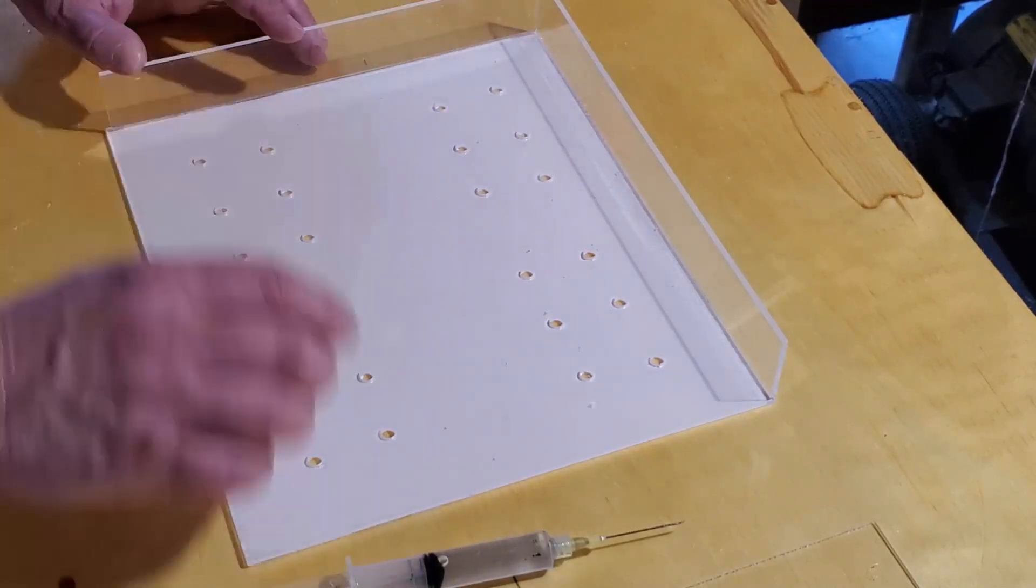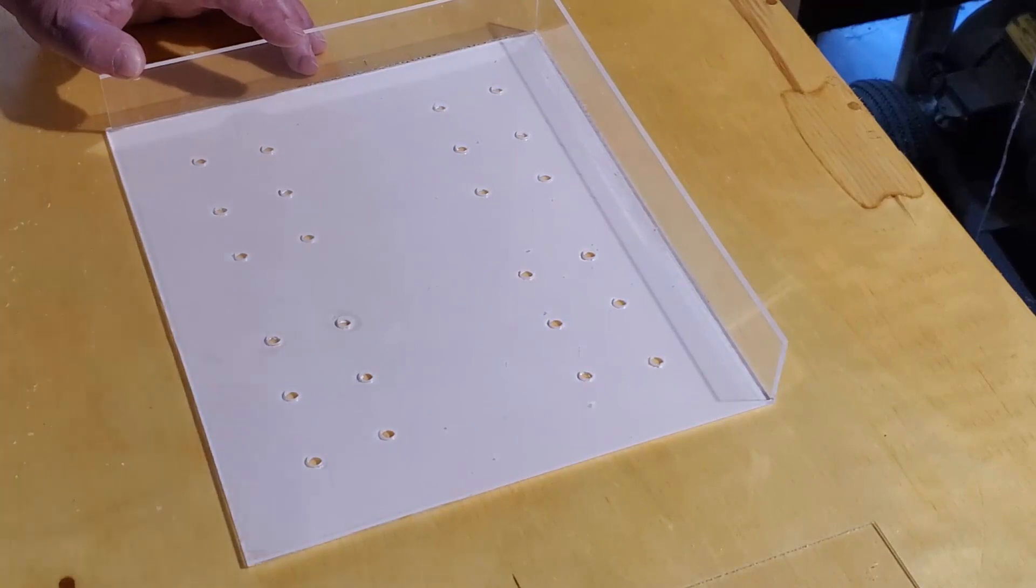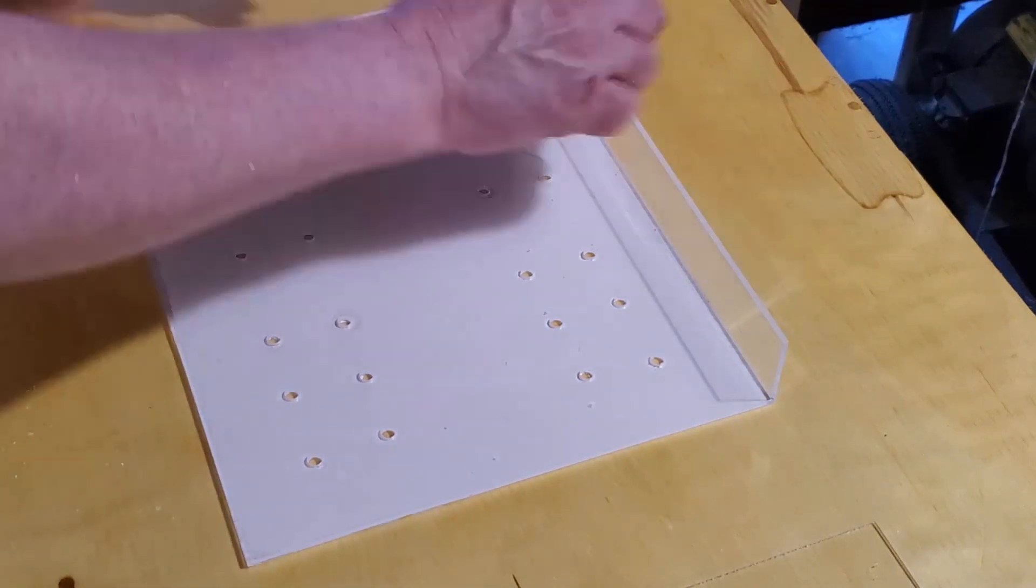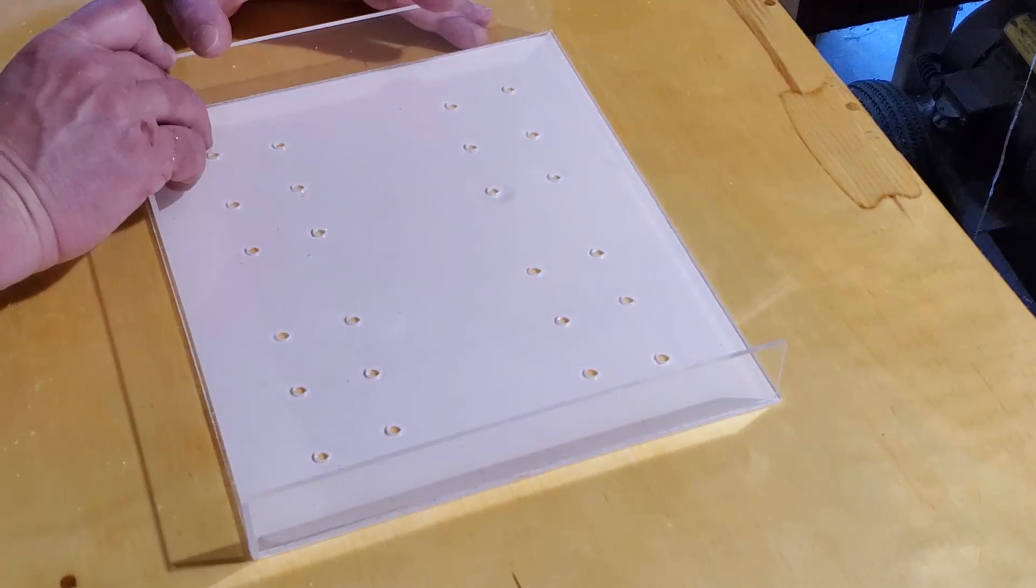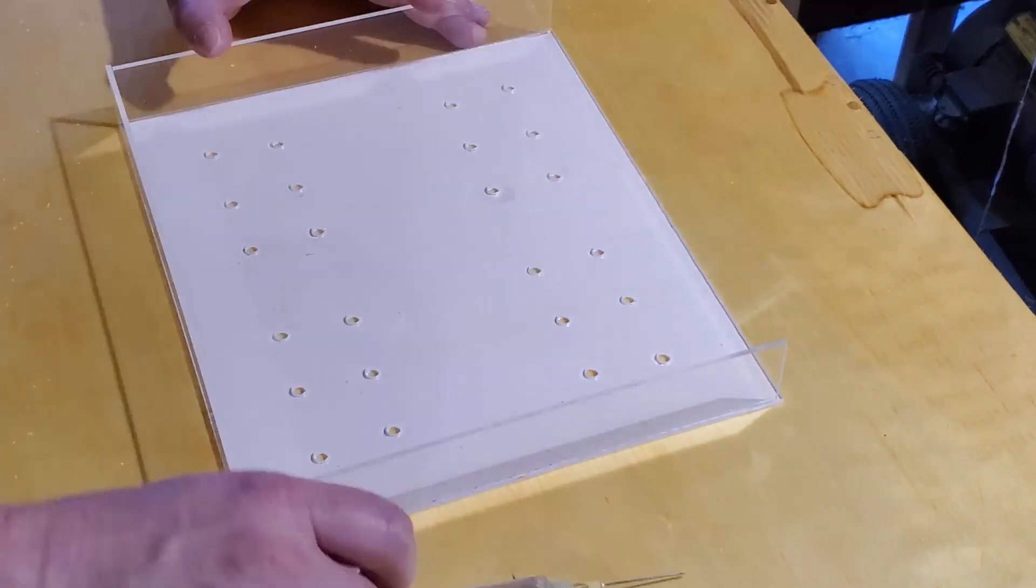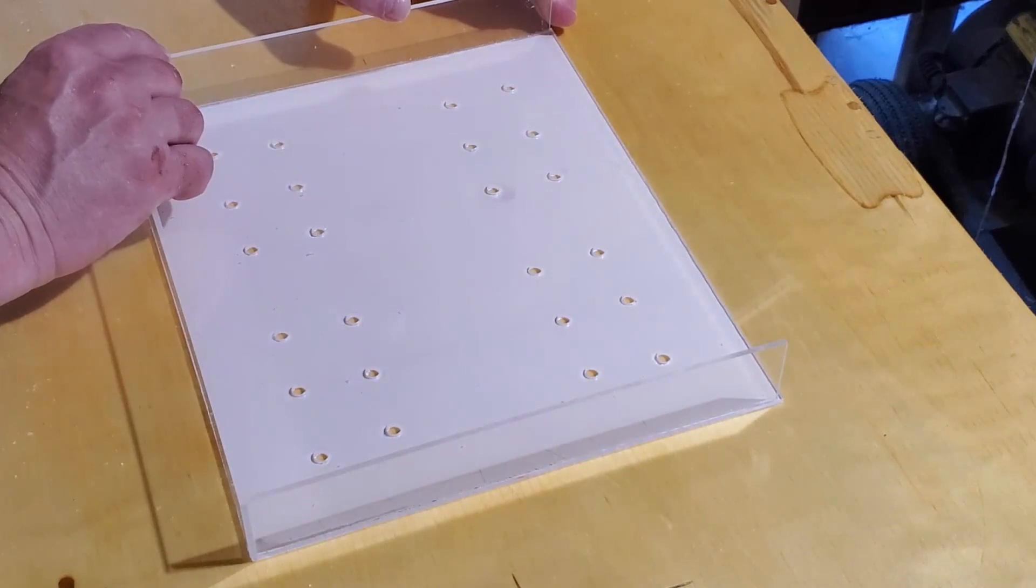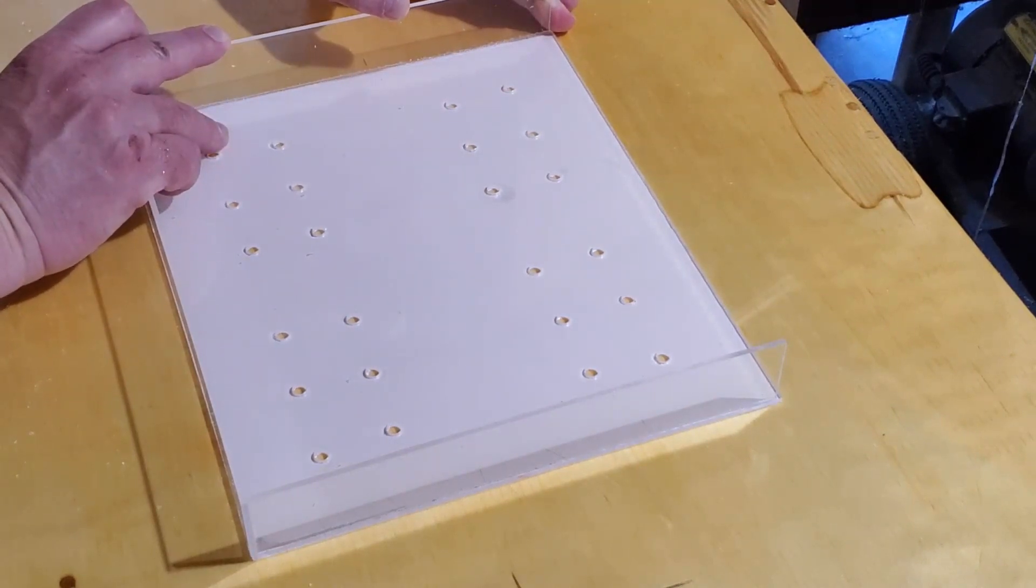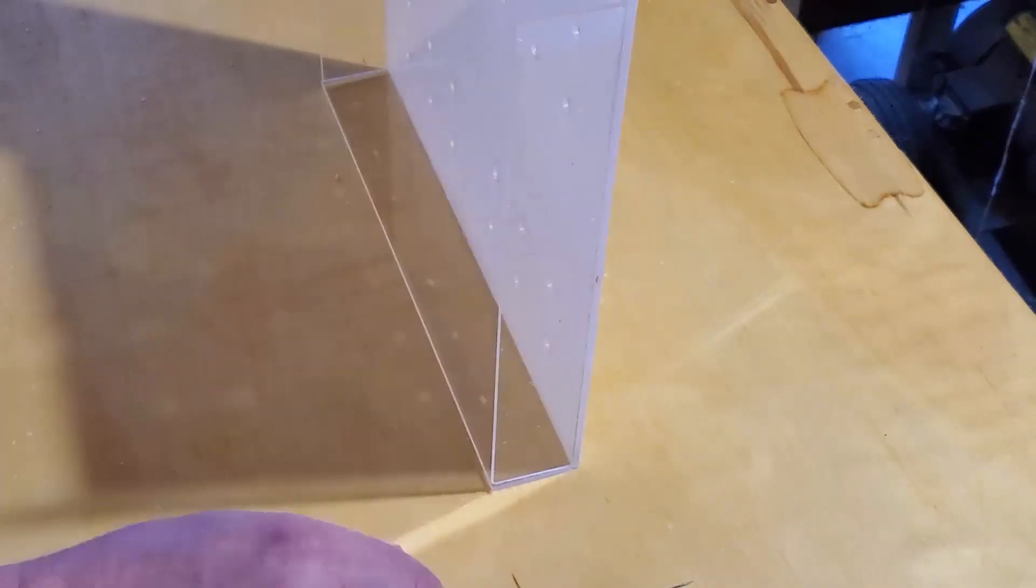But one of the things I don't have any of is terrestrial moss. And fortunately, this is almost spring here. The trees don't have leaves on them or anything yet, but the grass is starting to green up, and so is the moss. So I went out and I harvested some.